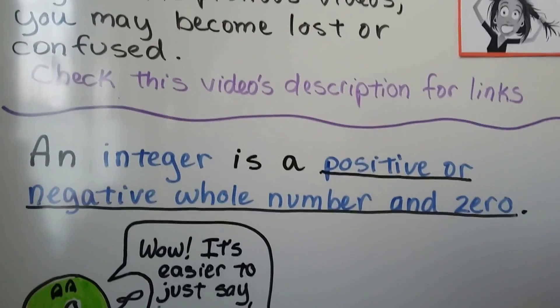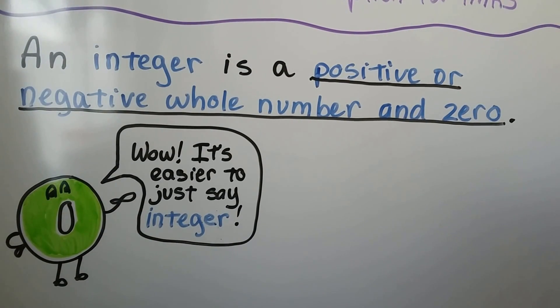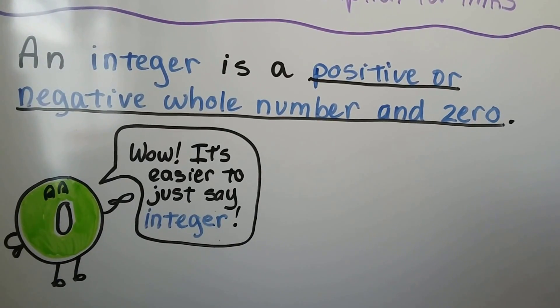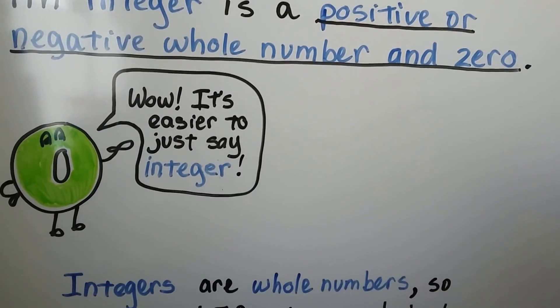An integer is a positive or negative whole number and zero. It's a lot easier just to say the word integer. Can you imagine having to say positive or negative whole number and zero every time you wanted to let someone know that it was an integer? So integers are short. We can use that.